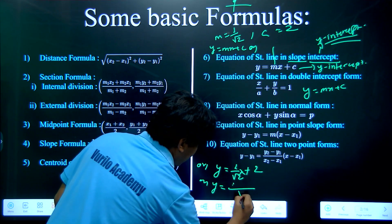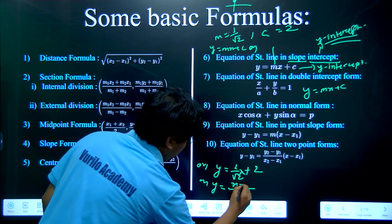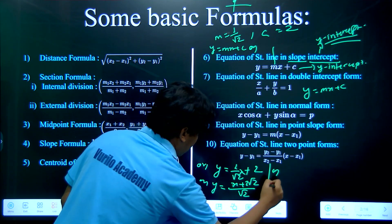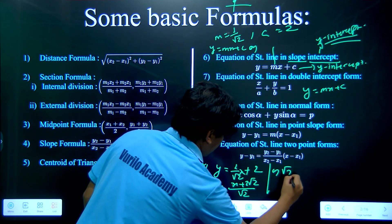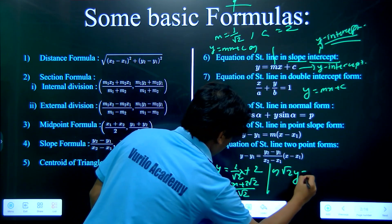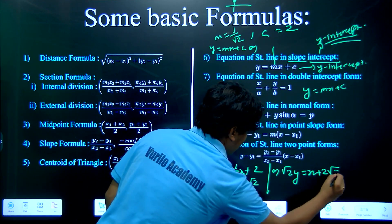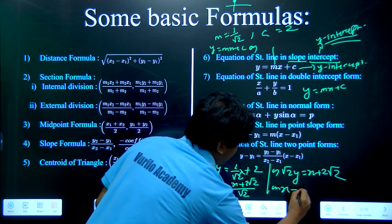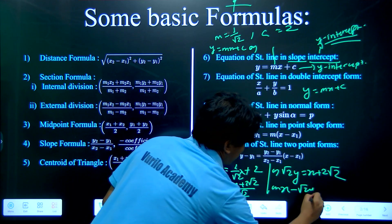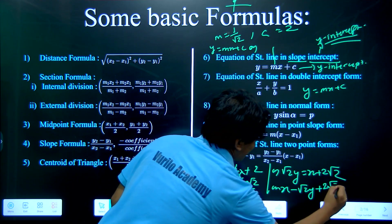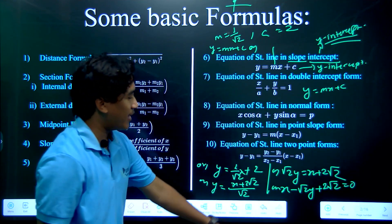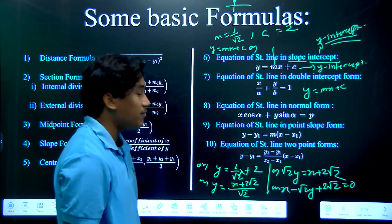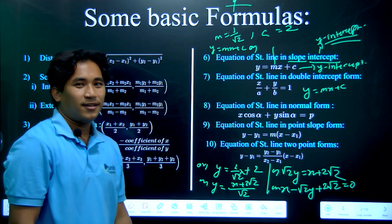We have: x times root 2 dx plus root 2, and root 2y equals 2x plus 2 root 2. Simplifying: 4x minus root 2y plus root 2 equals 0.